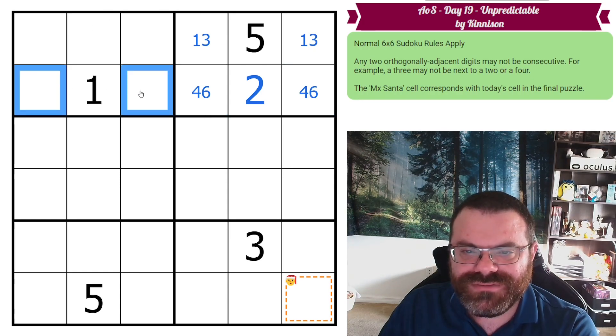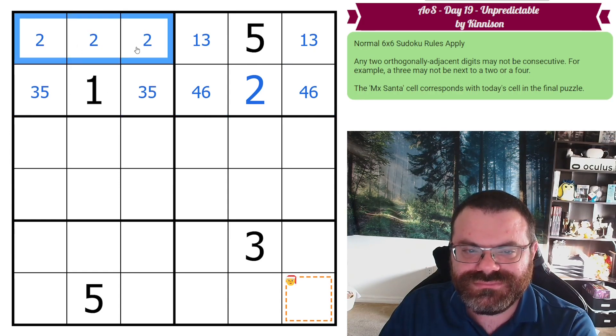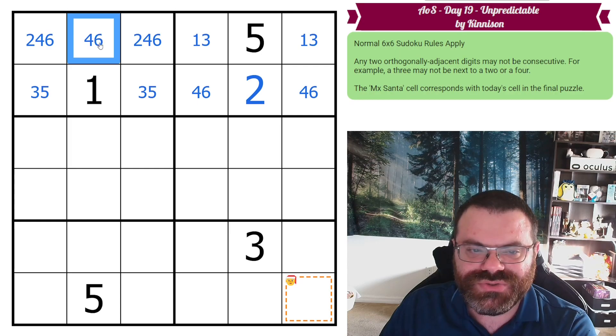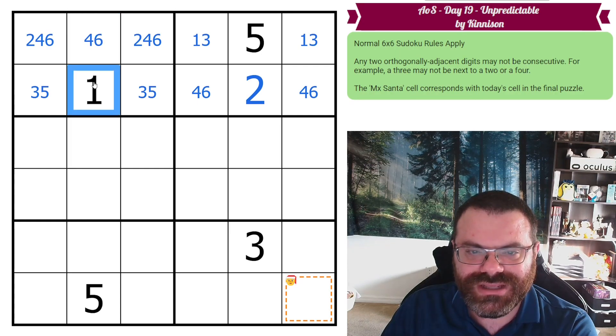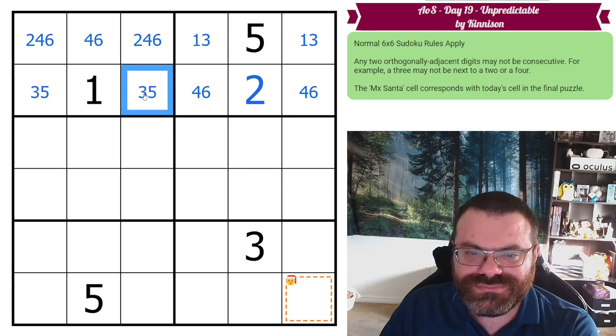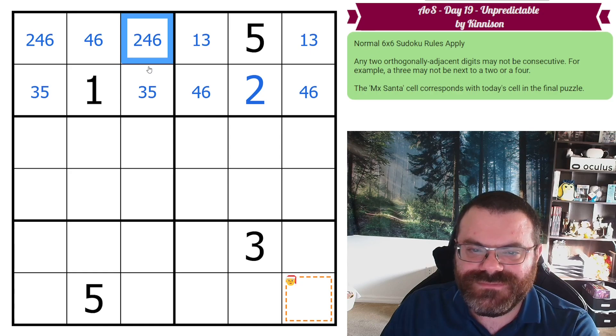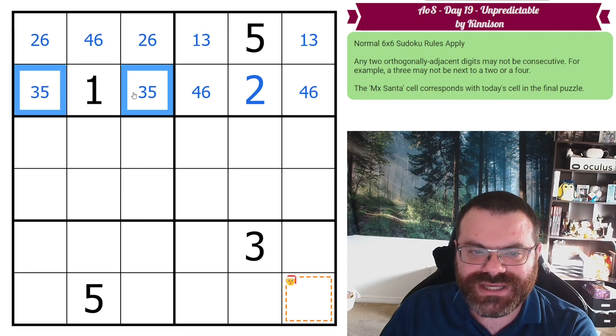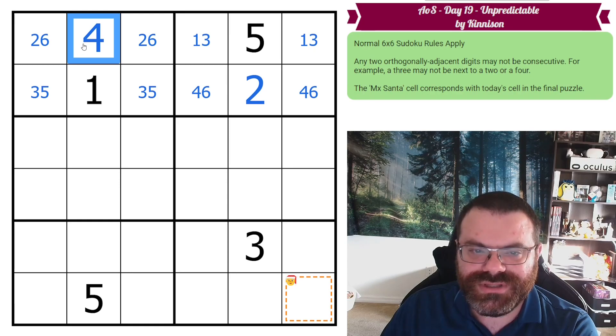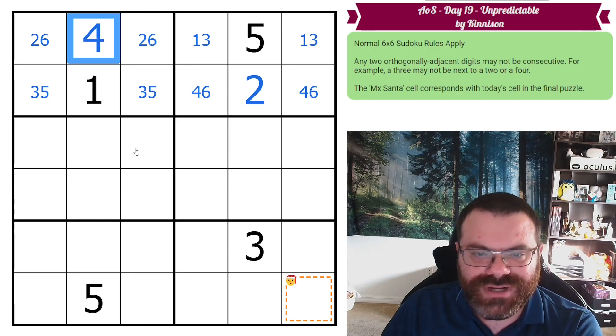So now through roping we can do 3-5 here, 2-4-6 here. This can't be a 2 because it's next to a 1. So this is a really neat trick here with non-consecutive. This cell is 3 or 5. No matter what it is, this cell can't be a 4. If this cell were a 4, it would eliminate both 3 and 5 from this cell. So 4 can't go in either of these cells because both of these cells are 3-5, which means 4 can only go here.